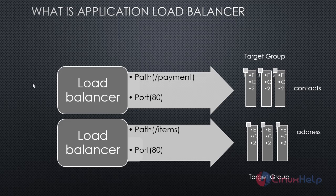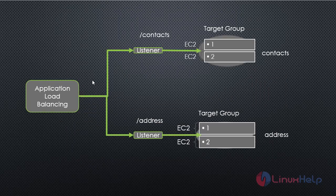In regular load balancing, if any request comes in it is forwarded to a target group. But in the case of ALB, we have one ALB that has access to all target groups. We introduce only one Application Load Balancer, and it will forward traffic on the basis of the path, the port, or the rules applied in the ALB.